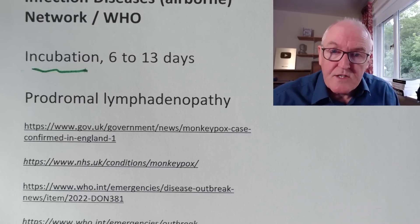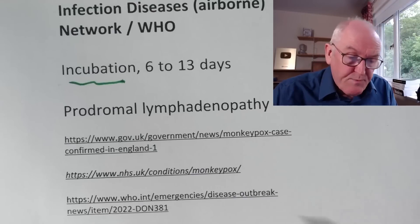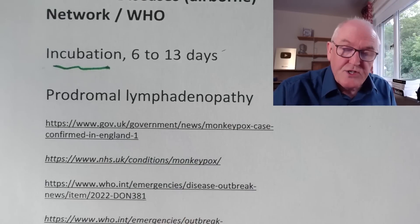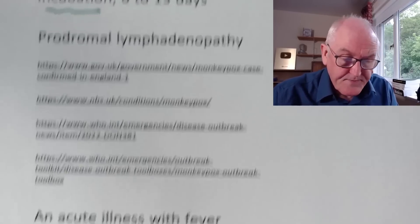The prodrome is when someone starts feeling ill before they have any specific features, and lymphadenopathy is swelling in the lymph glands, such as may occur in the neck, under the chin, in the armpits, or in the groin. This lymphadenopathy is prodromal — it comes on early when the person just starts to feel ill.